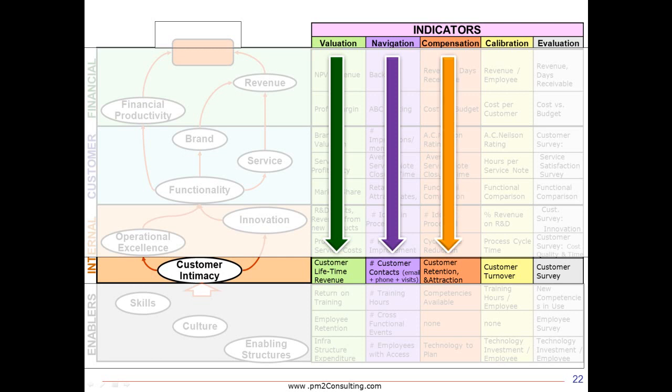Whereas for compensation, I'm going to need a more outcome metric, something like customer retention rates or customer attraction rates. Maybe to calibrate or benchmark my organization, I'm going to take a common metric like customer turnover. Now, that doesn't tell me how intimate I am with my customers, but it's kind of indicative, and I can get that data from industry associations and so forth. Finally, for evaluation, we're going to do our employee survey or customer survey. This allows us to do a more comprehensive study of what's going on, but again, we can't do it all that frequently.